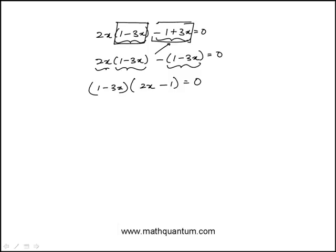Once you do that this becomes a quadratic form where it's already factored. So this would be equal to 0 and either this piece is 0 or that piece is 0.